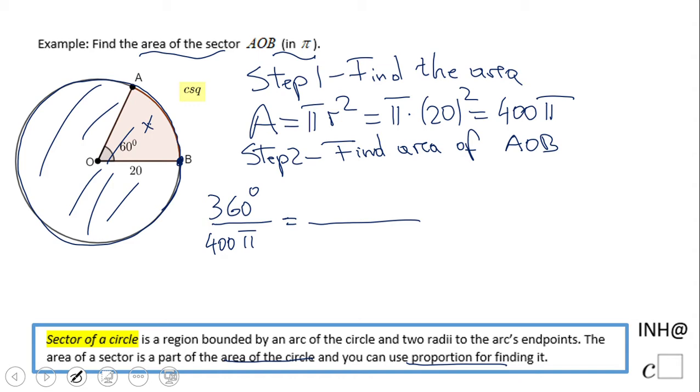But then I just go this arc, right, this central angle of 60 degrees. 60 over, I'm gonna call this area x. Now we don't really need those degree symbols. I'll suggest you keep them to be sure you are consistent. And you're gonna do cross multiplication. 360 times x equals 400π times 60.